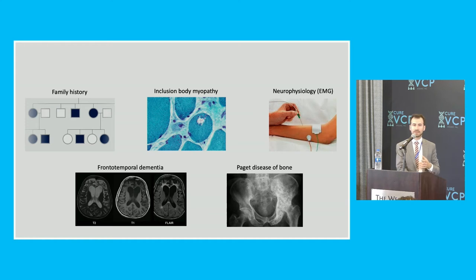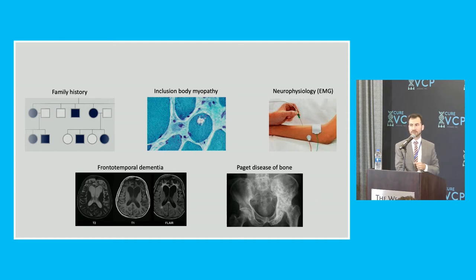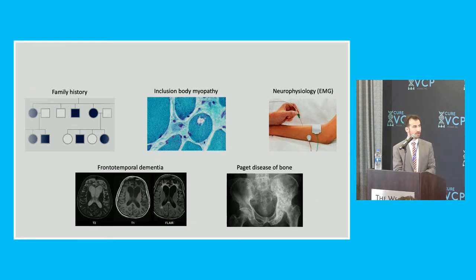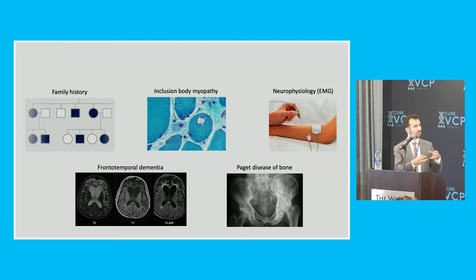Some of the other testing includes EMG studies or neurophysiology that can be helpful for giving objective evidence for myopathy or neuropathy in nerve conduction studies. We also have a picture of an MRI scan of the head showing some of the changes that can be seen in frontotemporal dementia. Increasingly, MRI is also used to look at the muscles, and muscle MRI can show changes characteristic for different genetic myopathies.